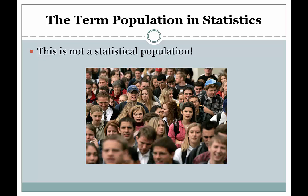You've probably heard people talk about a population of interest or a population for their study, and you might hear them say something like, our population is the set of all college students living in the United States today. The problem with that statement of the population is that it doesn't explain what about those students you're interested in.